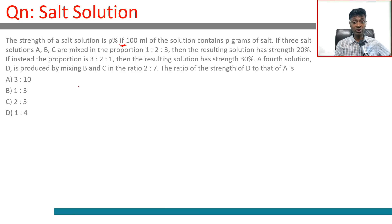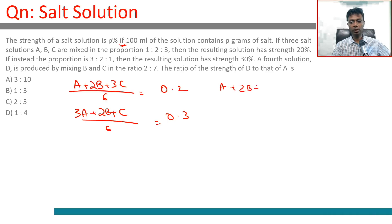So A plus 2B plus 3C divided by 6 equals 0.2, and 3A plus 2B plus C divided by 6 equals 0.3. Or A plus 2B plus 3C is 1.2, and 3A plus 2B plus C equals 1.8.